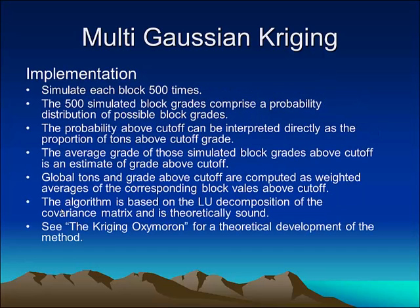So how do we implement this? We simulate each block 500 times. The 500 simulated block grades comprise a probability distribution or histogram of possible block grades. We look at those simulated block grades above cutoff and interpret those directly as the proportion of tons above cutoff grade. The average grade of simulated block grades above cutoff is an estimate of the grade above cutoff. For a global estimate of tons and grade above cutoff, we compute a weighted average of corresponding block values above cutoff. The algorithm is based on the LU decomposition of the covariance matrix and is theoretically sound. For more information on the theoretical development, see my paper titled 'The Oxymoron.'